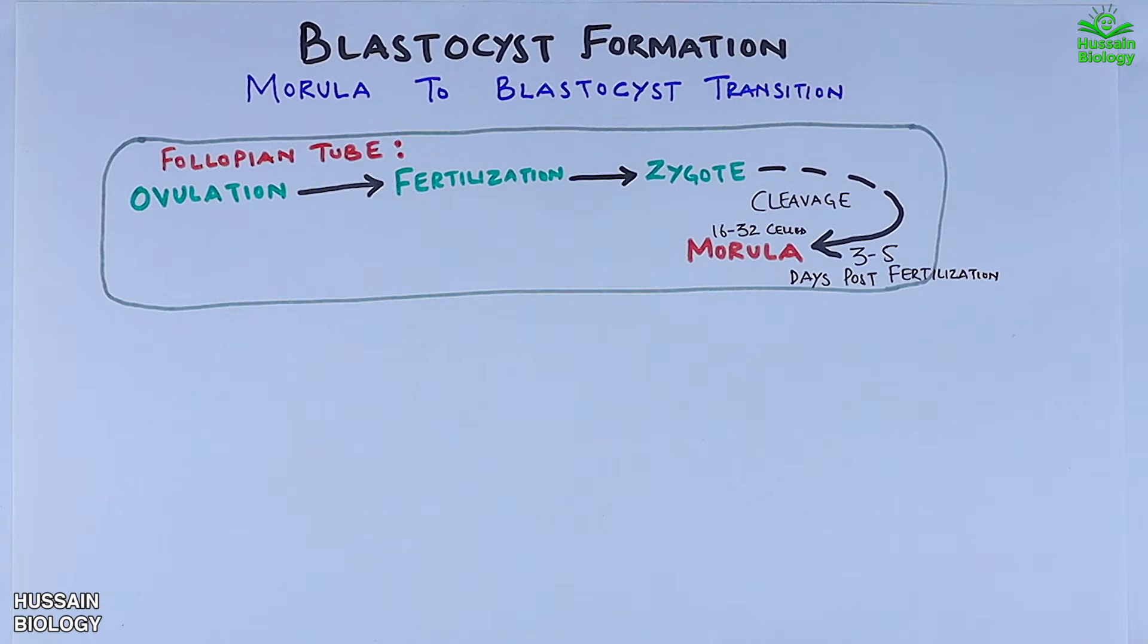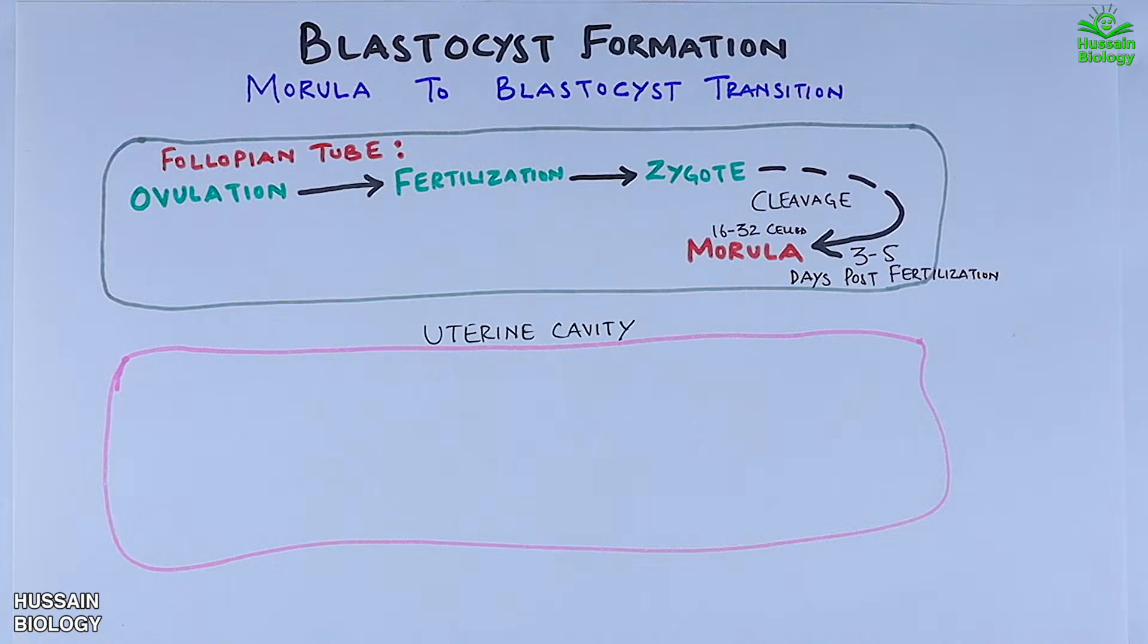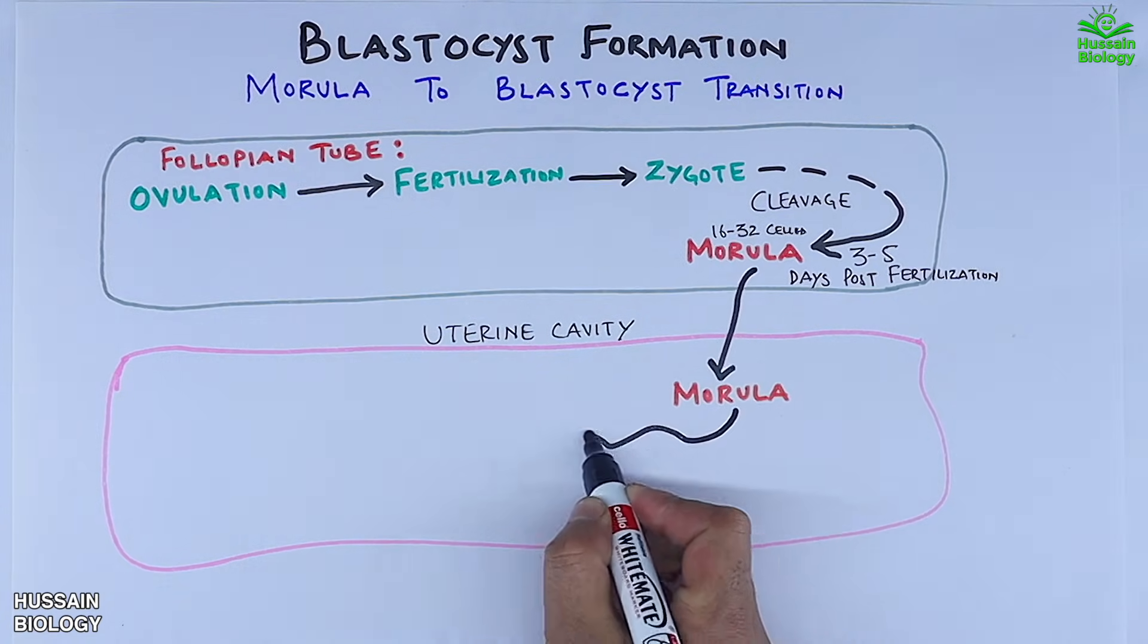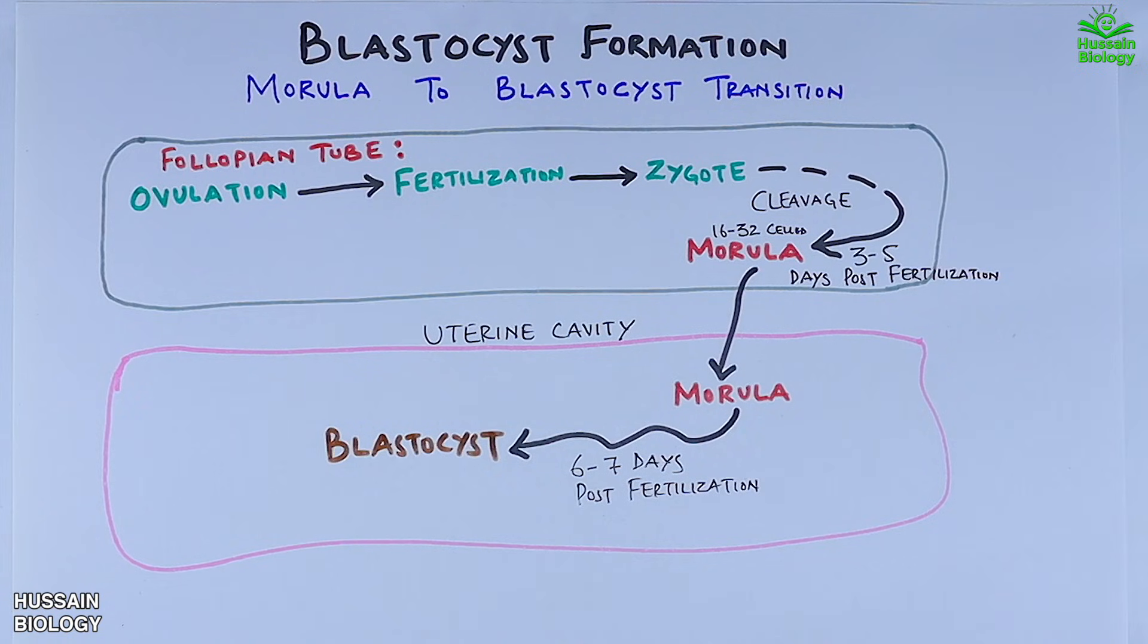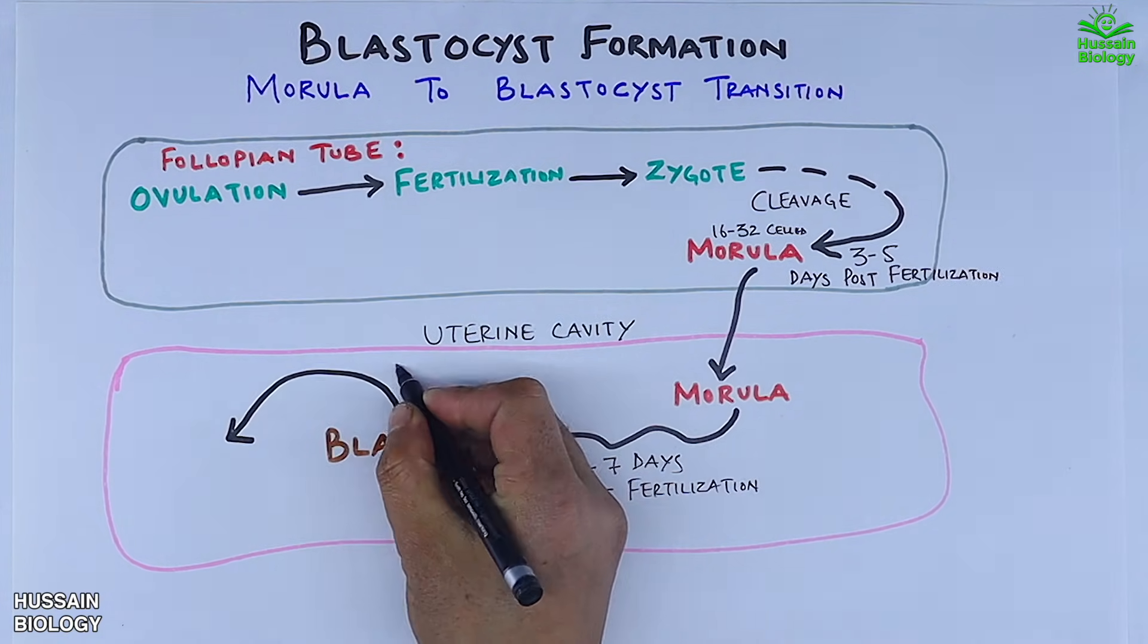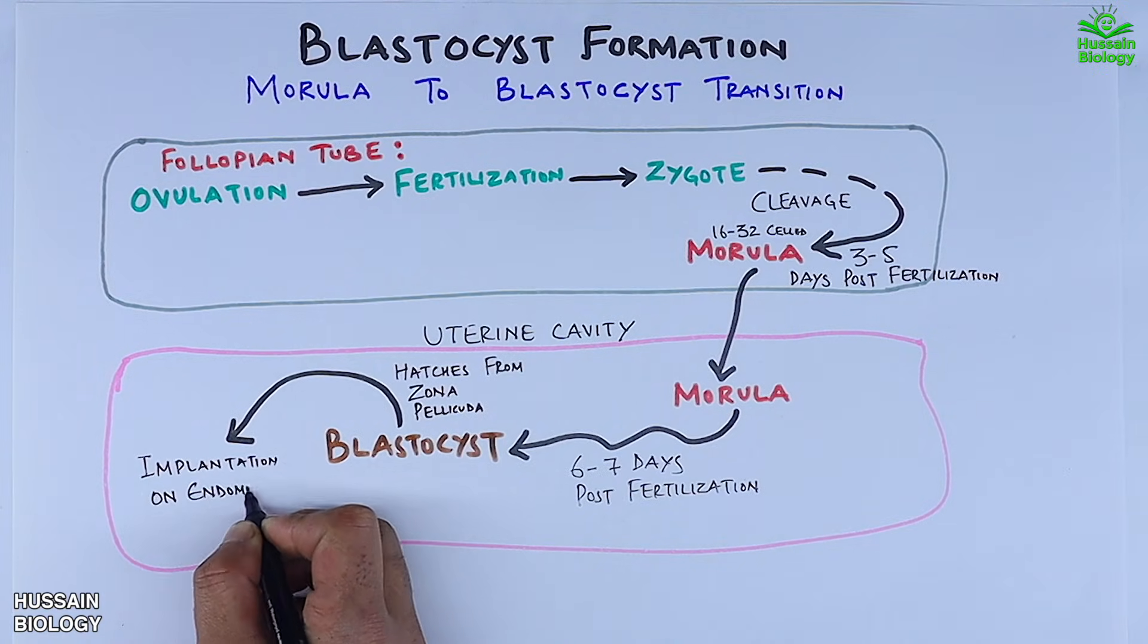And this morula is a 16 to 32 cell structure. Now this morula travels to the uterine cavity where it is converted into blastocyst six to seven days post fertilization. Then the blastocyst hatches out from zona pellucida. After that we see the implantation of blastocyst on endometrium.